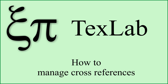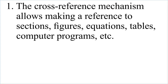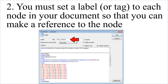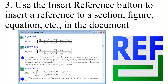The cross-reference mechanism allows making a reference to sections, figures, equations, tables, computer programs, and more. You must set a label or tag to each node in your document so that you can make a reference to it. Use the Insert Reference button to insert a reference to a section, figure, equation, etc. in the document.